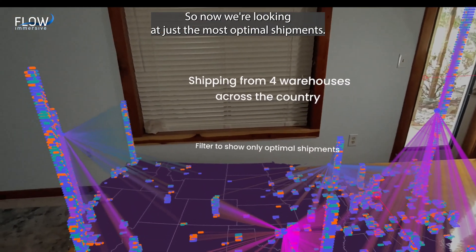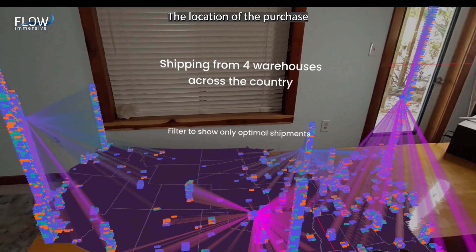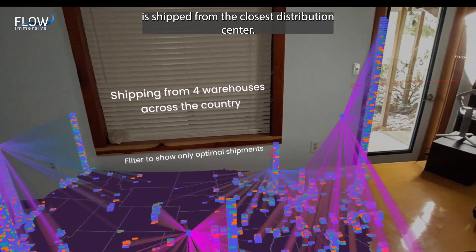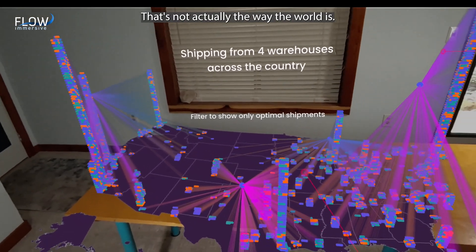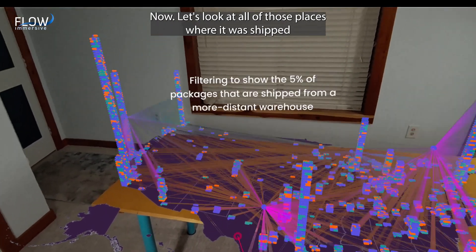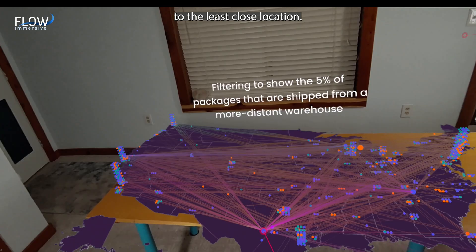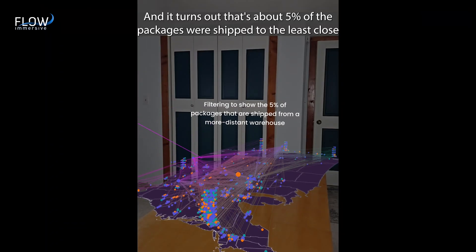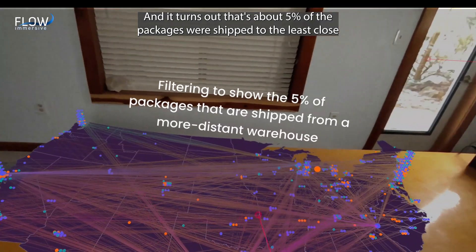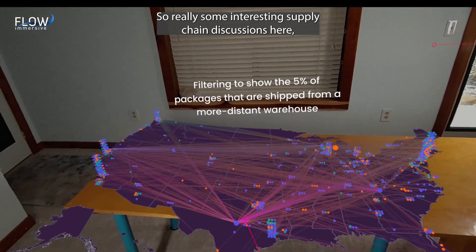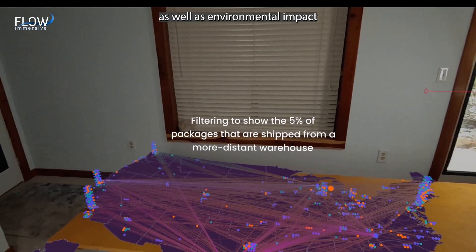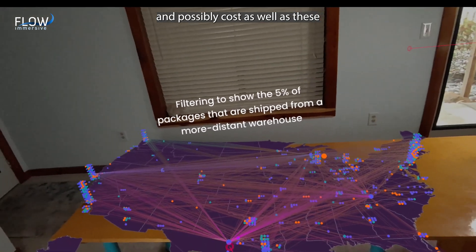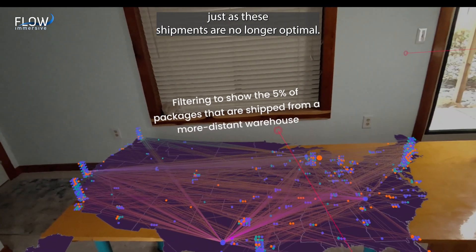So now we're looking at just the most optimal shipments. So where the end location of the purchase is shipped from the closest distribution center. Looks nice and clean. That's not actually the way the world is. Now let's look at all of those places where it was shipped to the least close location. And it turns out that's about 5% of the packages were shipped to the least close location. So really some interesting supply chain discussions here, as well as environmental impact and possibly cost, as well as the shipments are no longer optimal.